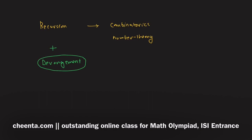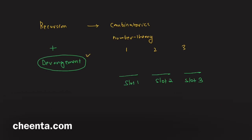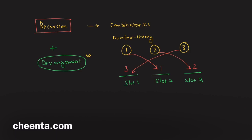Suppose there are three slots — slot 1, slot 2, and slot 3 — and three numbers 1, 2, and 3. A derangement is a rearrangement of these three numbers such that none of them goes to their original slot: 1 doesn't go to slot 1, 2 doesn't go to slot 2, 3 doesn't go to slot 3. They are completely shuffled. One example: 1 goes to slot 2, 2 goes to slot 3, and 3 goes to slot 1.